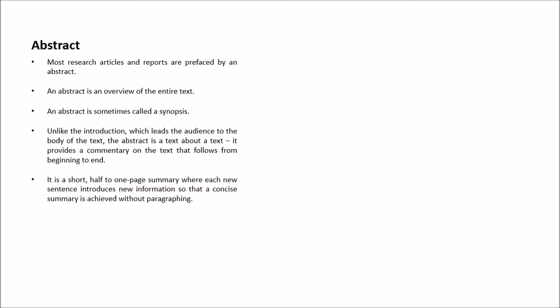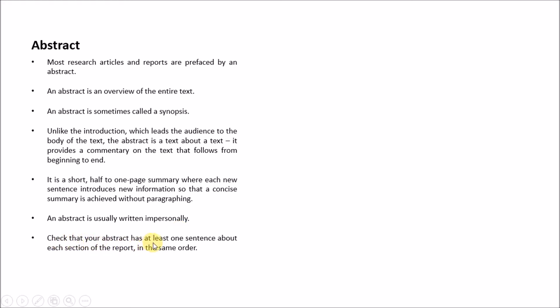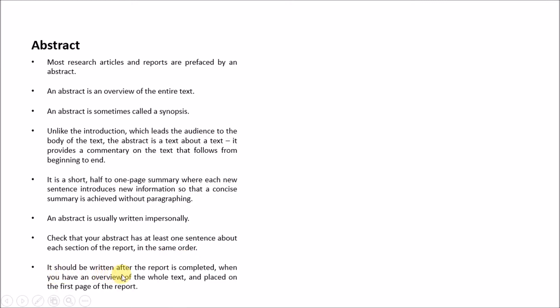The one-page reference applies to your thesis — your Master's, MBA, or PhD. For that case, single-spaced one page is okay. But basically it is not even half a page — more like a quarter of a page — where each new sentence introduces new information so that a concise summary is achieved without paraphrasing. The abstract is usually written impersonally, as this is academic writing.